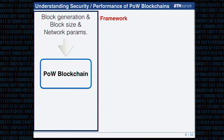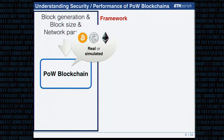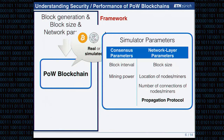Our quantitative framework has a first component: a proof-of-work blockchain instantiated with several parameters — block generation time, block size, network parameters, and so on — which can be a real deployed blockchain or a simulated one. The simulator captures important consensus and network layer parameters: block interval distribution, mining power distribution, block size distribution, geographical location of nodes and miners, up/down link, latency in the network.